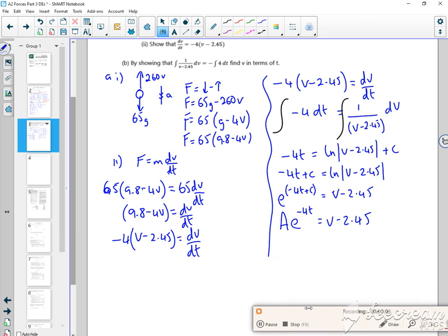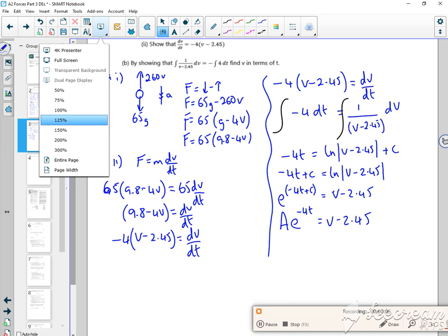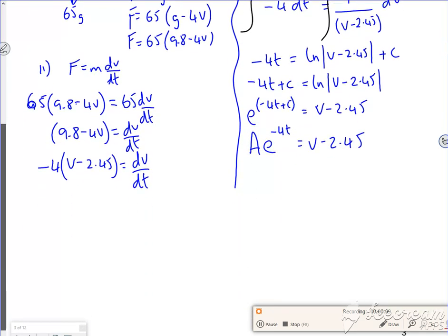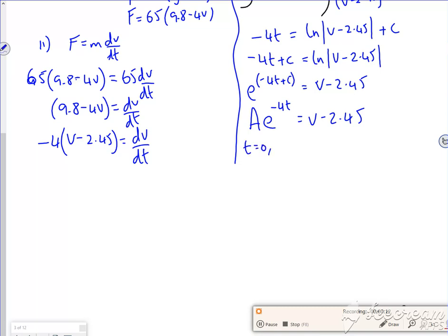So now I'm told that initially her speed is 19.6, so when t is 0, v is 19.6.